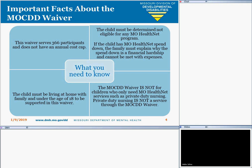If the child has MO-HealthNet spend-down, then the family must explain how the spend-down is a financial hardship and cannot be met with medical expenses. This requires parental income and resources to be considered in determining a child's eligibility for MO-HealthNet when the child lives at home with parents. This requirement, called deeming parental income to the child, is waived for children who participate in the MO-KID waiver. For 2019, the monthly income limit for a child is $1,348 and the resource limit is $3,000.